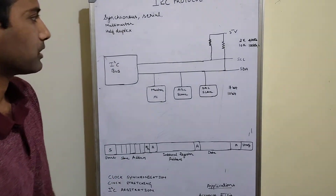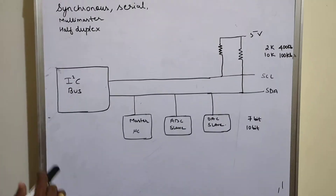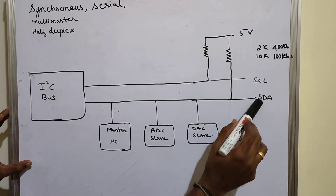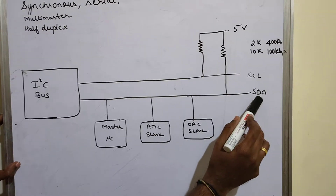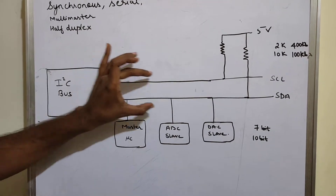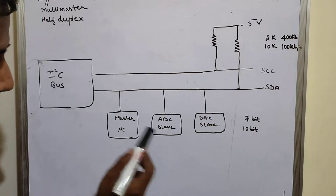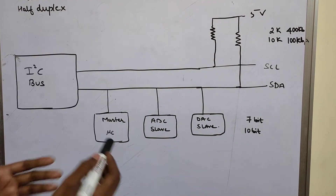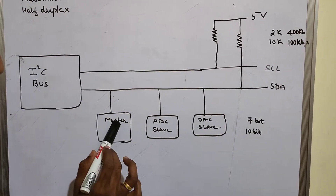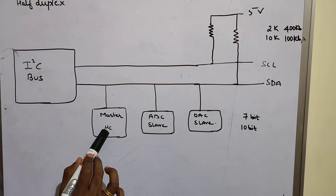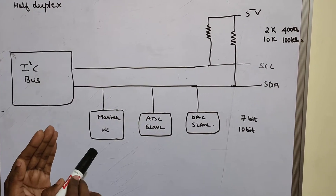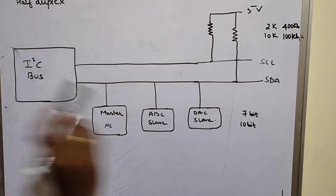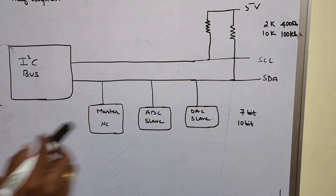Now let's look at the I2C bus architecture. The I2C bus has two lines: SCL (Serial Clock) and SDA (Serial Data). We can have multiple masters and multiple slaves — here I've listed three devices as an example. The master is usually a microcontroller, and slaves can be ADC, DAC, LCD, temperature sensors, audio sensors, etc.